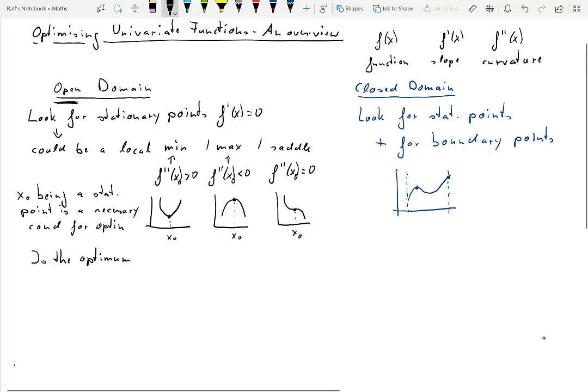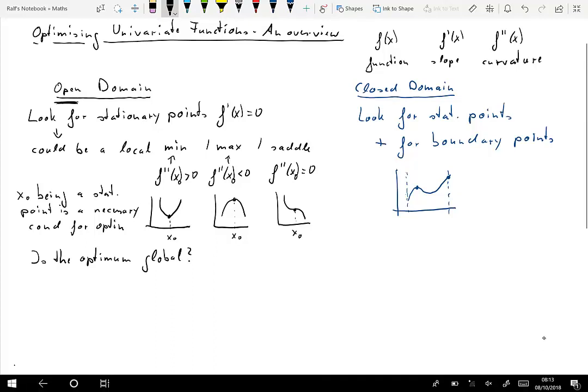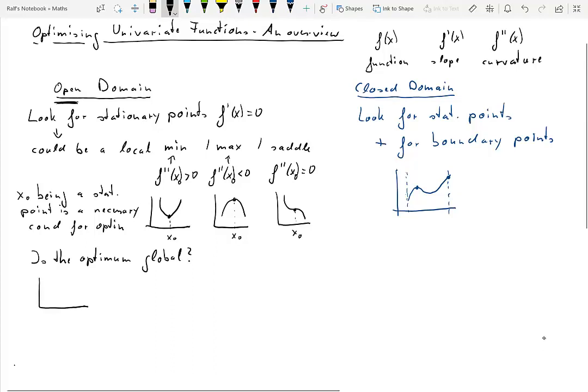Next, we're going to look at the question whether a particular optimum we found is more than local. Is it global? Does it mean is it really the maximum of the function over the entire domain? So let's start with a sketch.